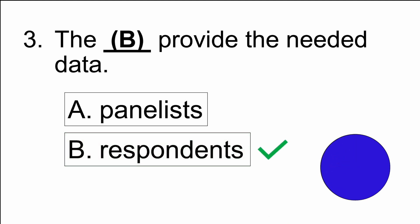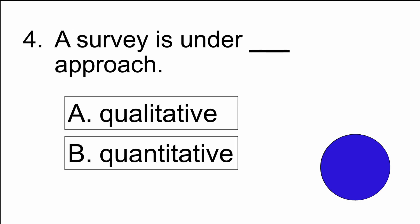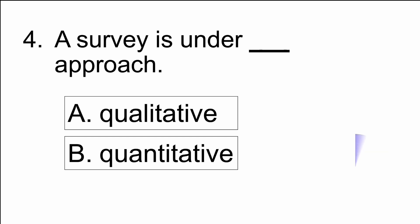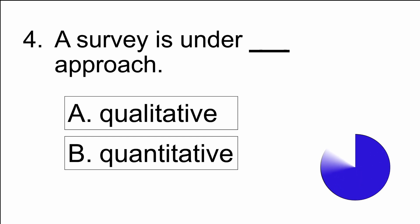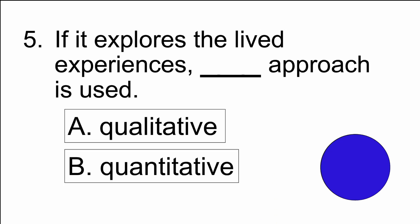The answer is B) respondents. Number four: a survey is under blank approach — A) qualitative, or B) quantitative. The answer is B) quantitative. Number five: if it explores the lived experiences, blank approach is used — A) qualitative, or B) quantitative.